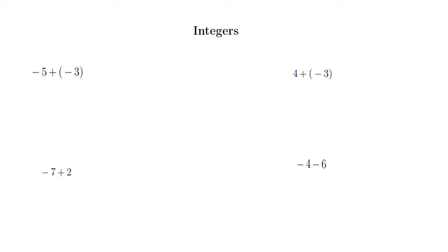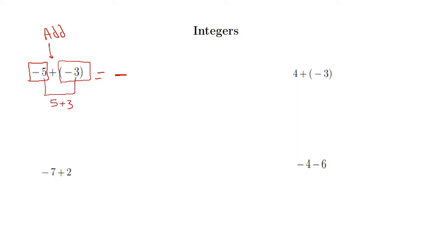Let's start with how we can add a positive number with a negative number, working with addition and subtraction. Here I have a negative 5 and another negative number, negative 3. I am adding two negative numbers, so the answer should be negative. I add 5 and 3: 5 plus 3 is 8, so the answer is negative 8. If you are adding two negative numbers, the answer is always a negative number.